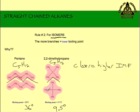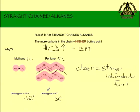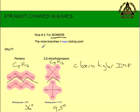So the two rules: for straight chains, the more carbons, the higher the boiling point. And the more branches, the lower the boiling point — it'll boil at a lower temperature. There it is — real quick, real simple.